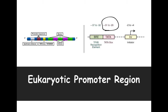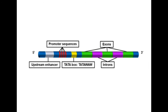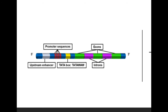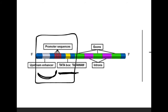Just like prokaryotic organisms need a promoter region — that special region in DNA for RNA polymerase to bind — eukaryotes need something very similar. Eukaryotic DNA also holds a promoter region that serves the same purpose, including RNA polymerase binding, orientation, and enhancing transcription. We see a TATA box present, and upstream to that is an enhancer region. Together these help the RNA polymerase bind, orient, and enhance the transcriptional process.